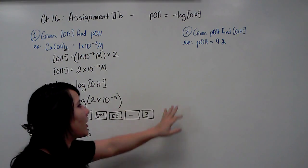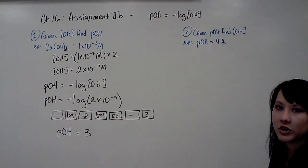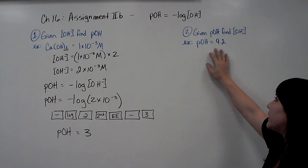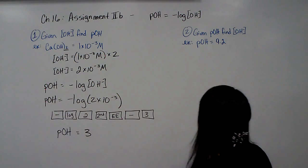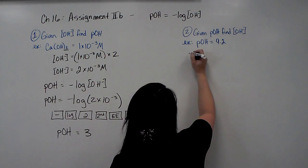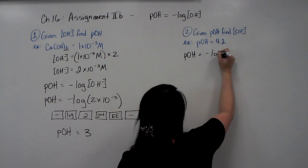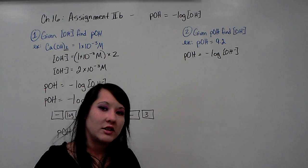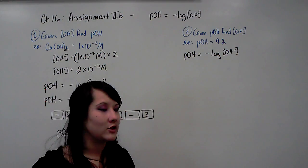Okay, so the other one, which is a little smidgen more complicated, but not much, if you're given the POH and asked to find the hydroxide concentration. So my example for you here is if the POH is 9.2. All right, so once again, our equation is POH equals negative log of hydroxide.